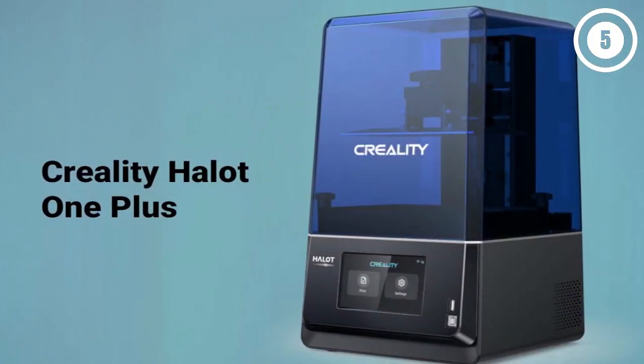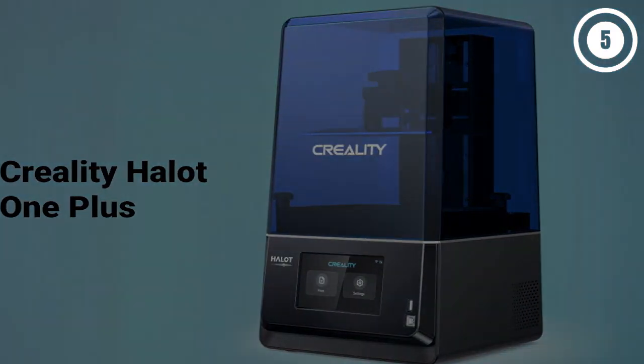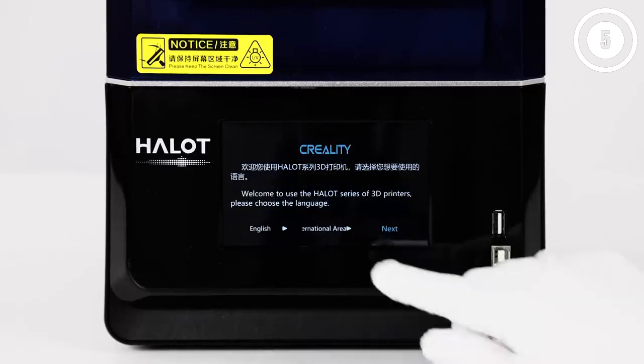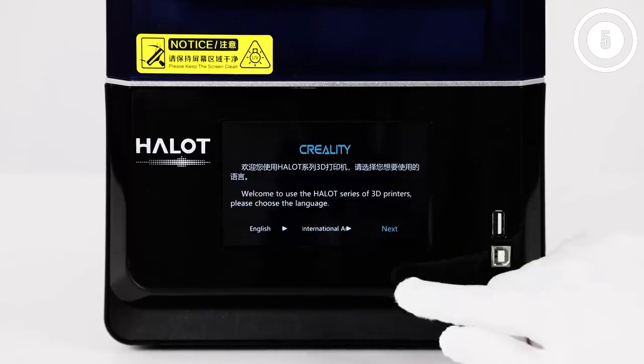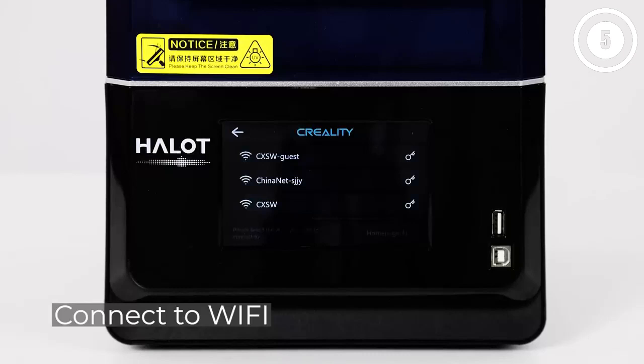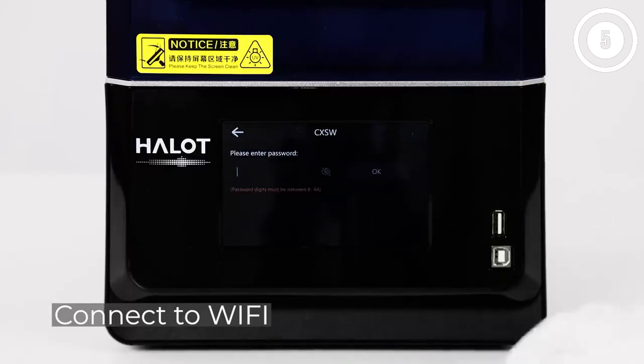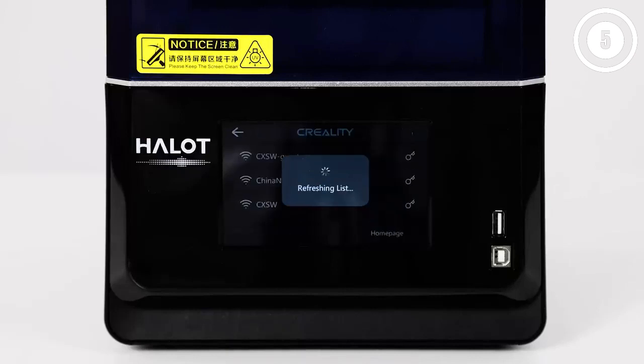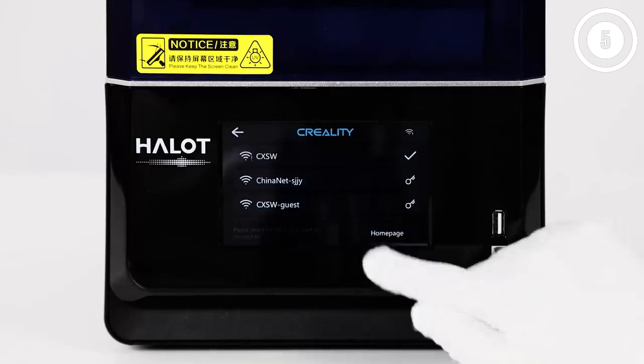Unlike other printers in this price range, the Halot One Plus includes Wi-Fi connectivity and a slicer app which allows users to quickly process models and prepare them for printing almost effortlessly. The large 7.9-inch mono LCD provides 4K resolution, 4,320x2560.